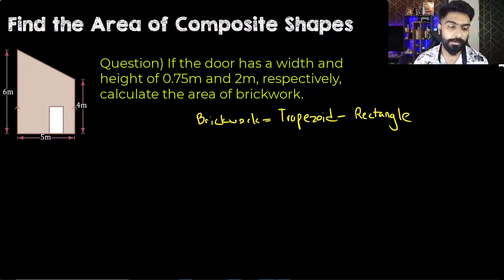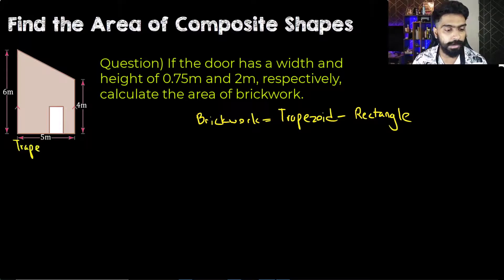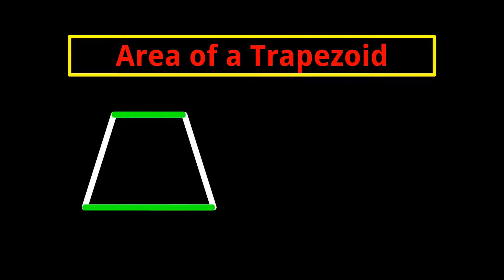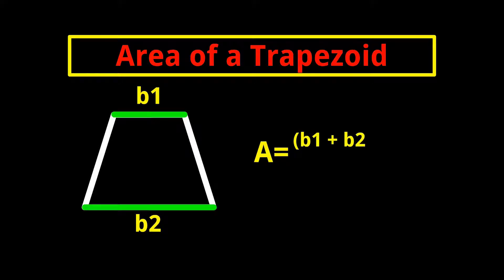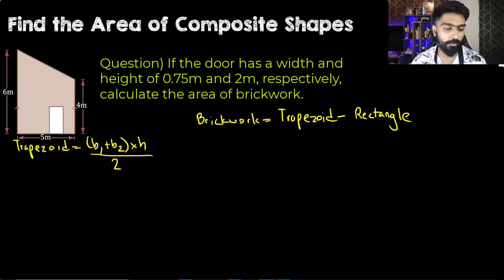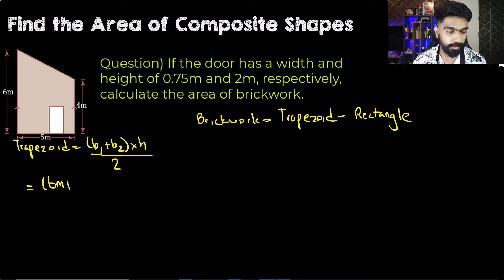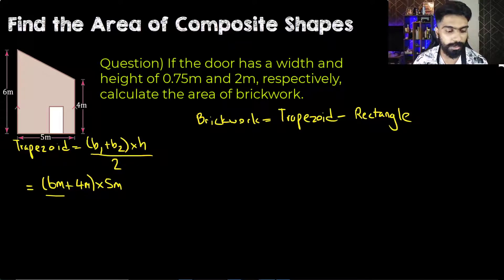First, let's find the area of the trapezoid. The formula is: the sum of the parallel sides (b1 + b2), multiplied by the height, divided by two. The parallel sides in this case are 6 meters and 4 meters, so we have (6 + 4) multiplied by the height of 5 meters, all divided by two.